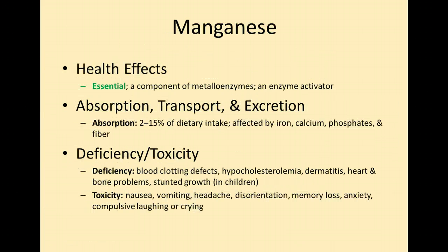Manganese is an essential component of metalloenzymes and an enzyme activator. Its absorption is affected by iron, calcium, phosphates, and fiber. Deficiency causes blood clotting defects, low cholesterol, dermatitis, heart problems, and stunted growth in children. Toxicity, like many trace elements, can cause nausea, vomiting, and headache. A notable symptom of manganese toxicity is compulsive laughing or crying — patients may present to their physician with that unusual symptom.